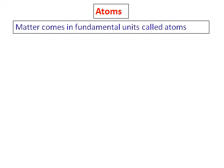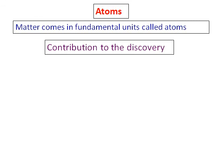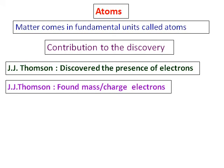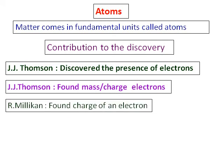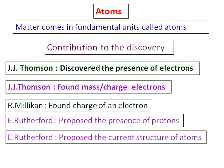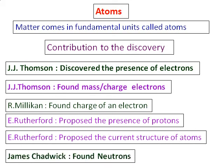Atoms. What are atoms? Matter comes in fundamental units and we call them as atoms. I am not going to go into details on the discovery of atoms. We will just sum it up. J.J. Thompson was the first person who discovered the presence of electrons and also found the mass charge ratio of electrons. Millikan was the one who found the charge of an electron. Rutherford proposed the presence of protons and the current structure of atoms. And James Chadwick found neutrons.